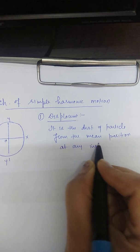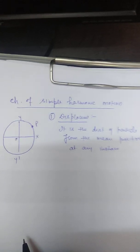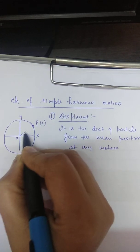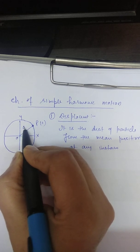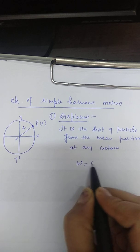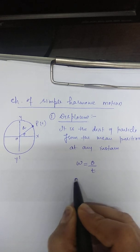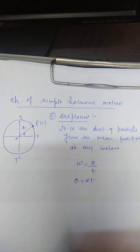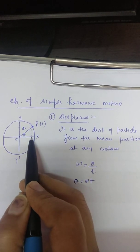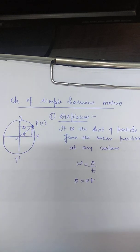To calculate this displacement, we consider the position of the particle at any instant, that is at time t. The distance o to p is 'a', and the angular velocity is omega. Omega equals theta upon t, and the angle traversed is theta, so theta equals omega into t. In the last lecture, we discussed its projection on the y-axis and x-axis, which is equivalent to simple harmonic motion.